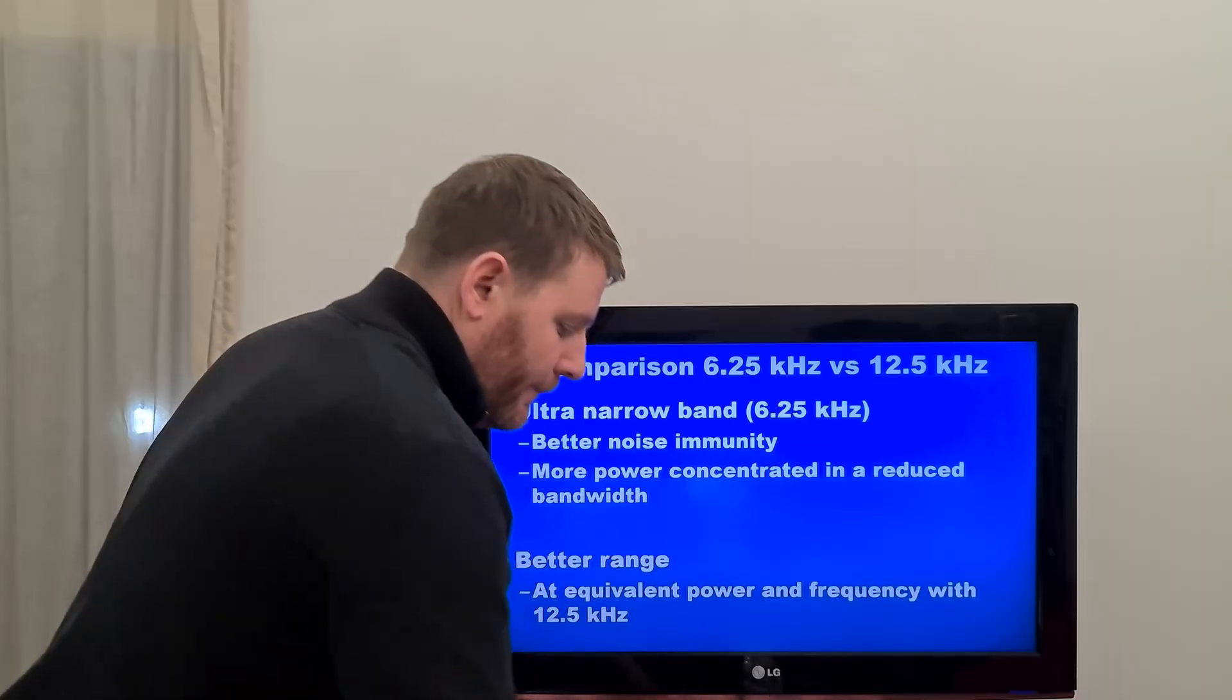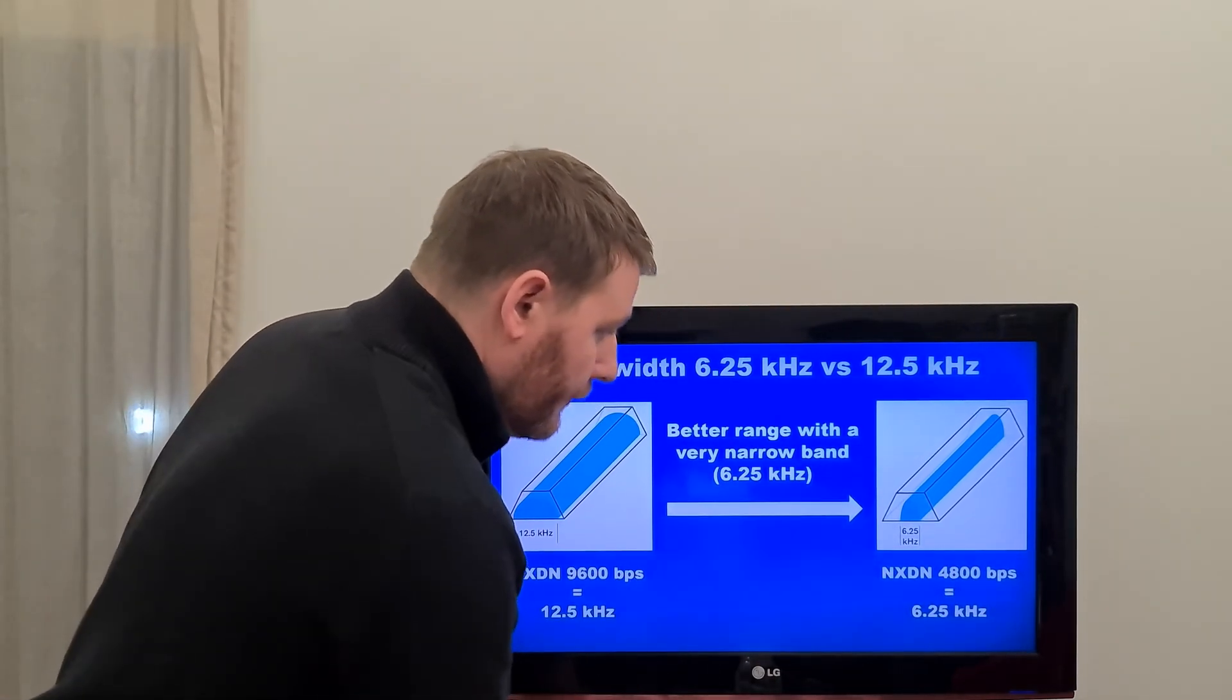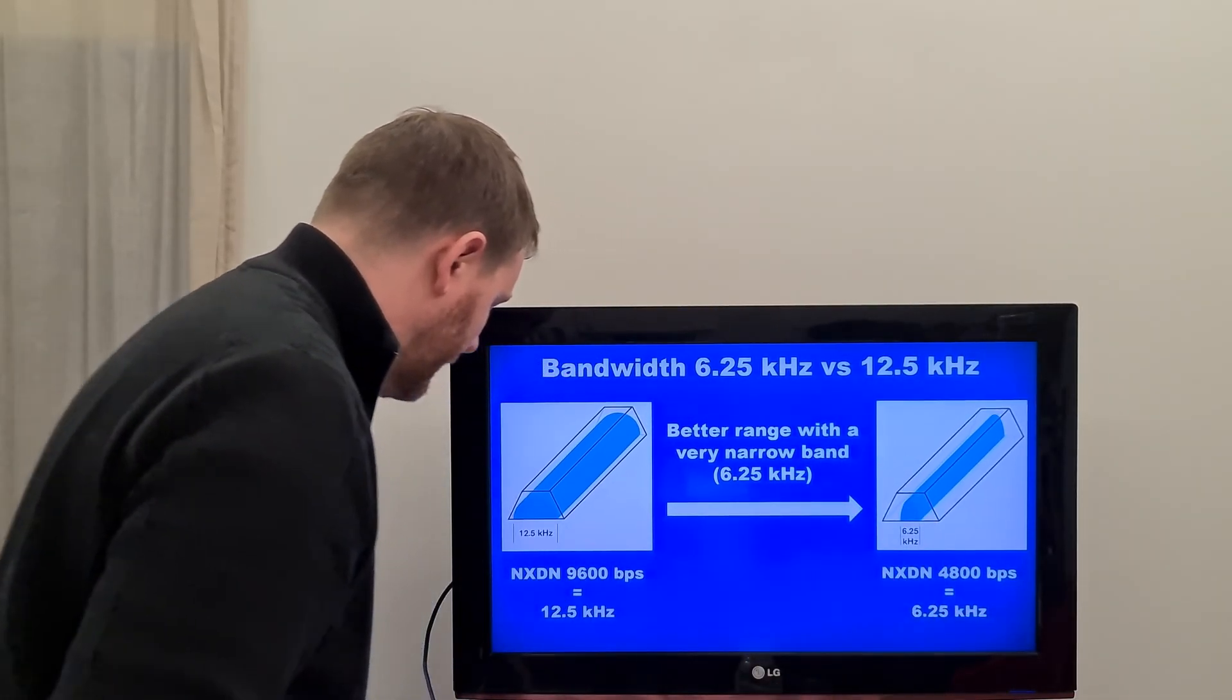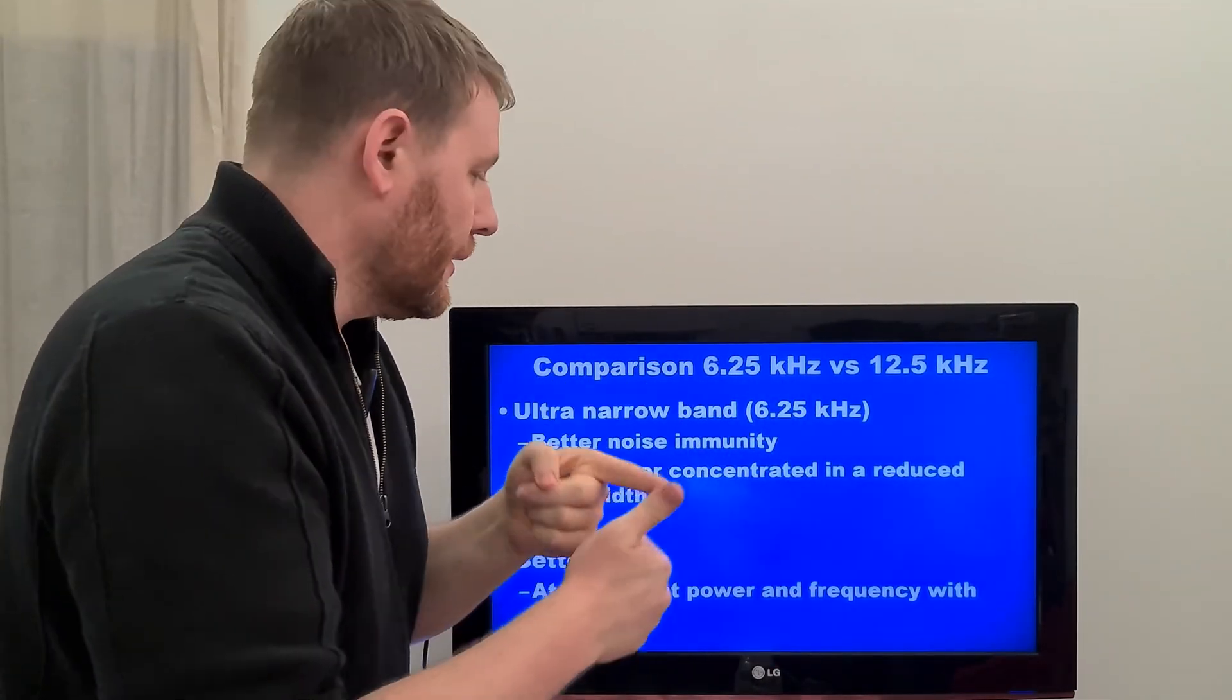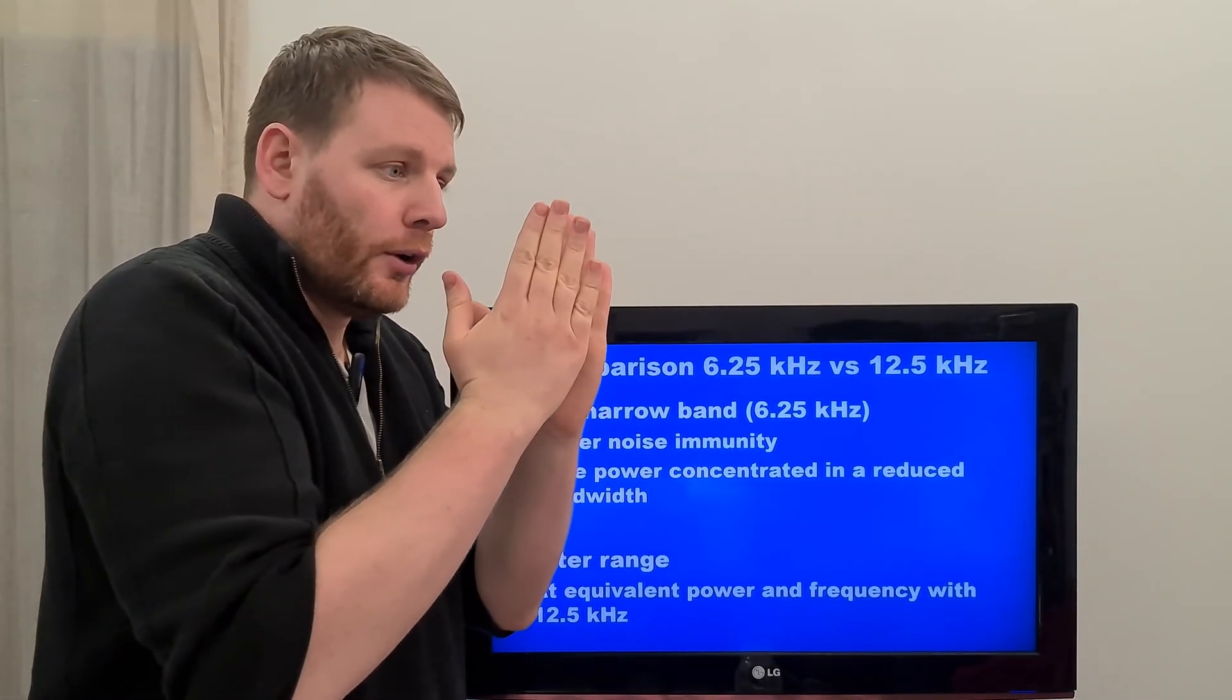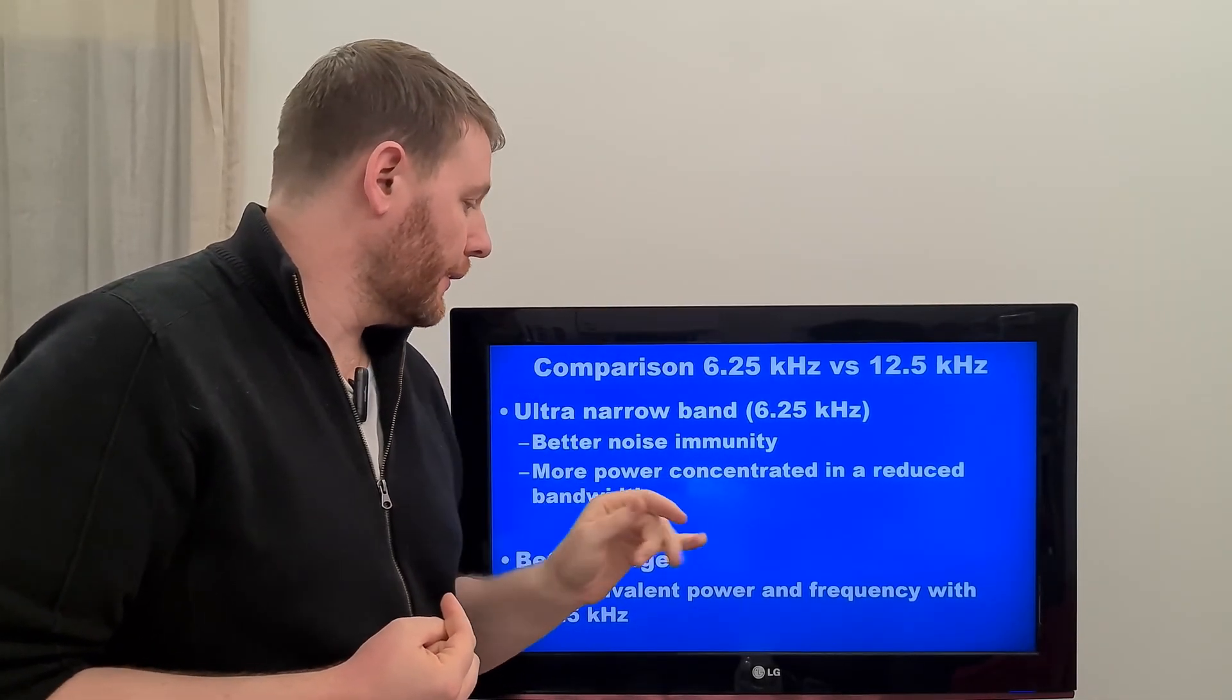For DMR, here, when you transmit, you have 12.5 kHz to transmit the power. When you use NXDN, for example, or any 6.25 kHz, you use the same power in reduced bandwidth. So, the covered range is better because there is better noise immunity. Due to the very narrow band, the noise is more filtered and the power is concentrated in a reduced bandwidth.